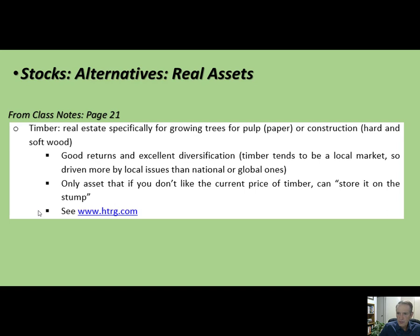Timber has two aspects of two asset classes we're going to talk about — both real assets. Real estate is a real asset; commodities is a real asset. So timber is both of those, somewhat in between those two categories. You can grow trees for pulp, which is for paper, or you can grow trees for construction. And a wonderful thing about timber is you can change your strategy midstream — if pulp prices are really high, you can harvest your trees early. If not, you can let your trees grow longer.